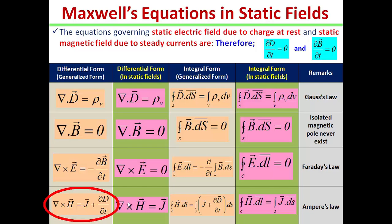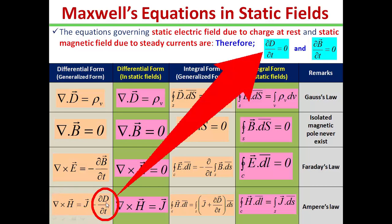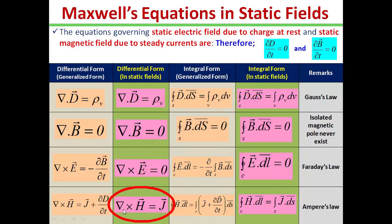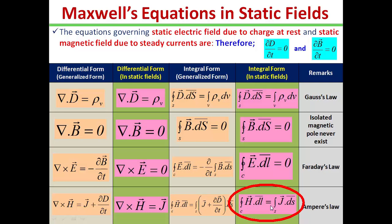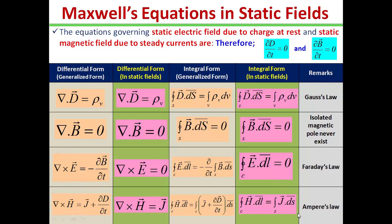The fourth Maxwell equation in generalized form is ∇×H = J + ∂D/∂t. In the static field, ∂D/∂t = 0, meaning we will only have the conduction current — there will be no displacement current. So in the static field, the differential form reduces to ∇×H = J, only conduction current. And the integral form reduces to the contour integral of H·dl = surface integral J·dS. So Maxwell's third and fourth equations are modified in the static field, while the other two equations remain the same.